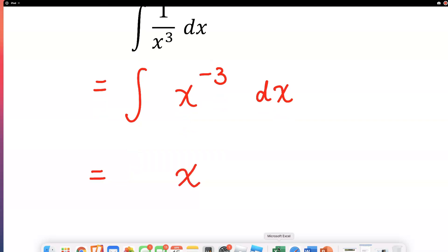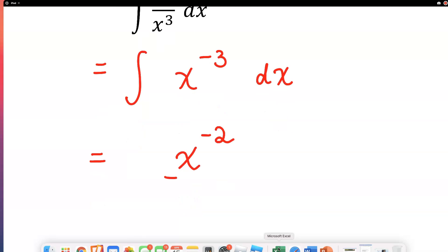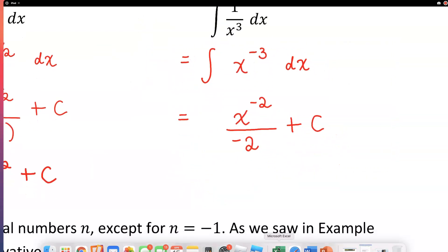Increase the exponent by one. So what is one bigger than negative three? Negative two. And you must divide the whole thing by negative two, the new exponent. And we are done. Just put that plus C. And you can try to write this a little bit. I guess we can simplify this. How about we try that?